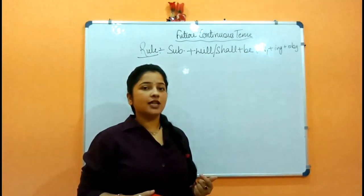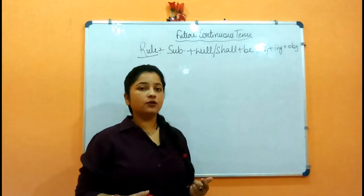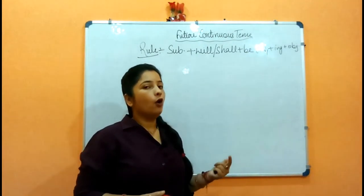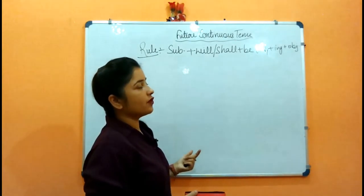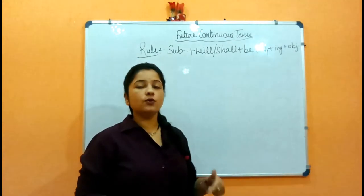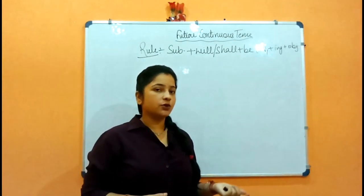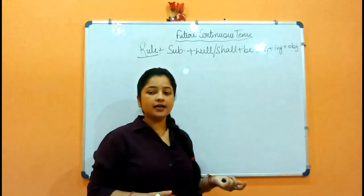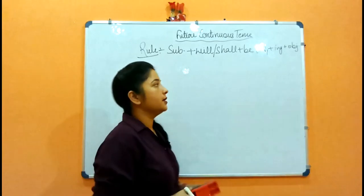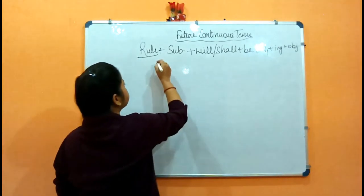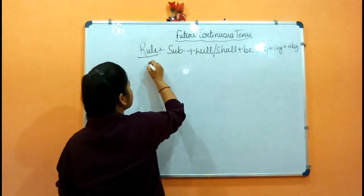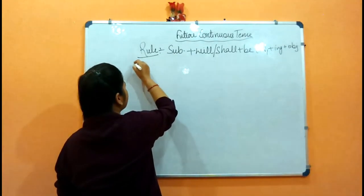After 'be', we add the first form of the verb plus '-ing' — which you already know from present continuous and past continuous as well. Then if there is an object, add it; otherwise it is not needed. Now let me write an example.